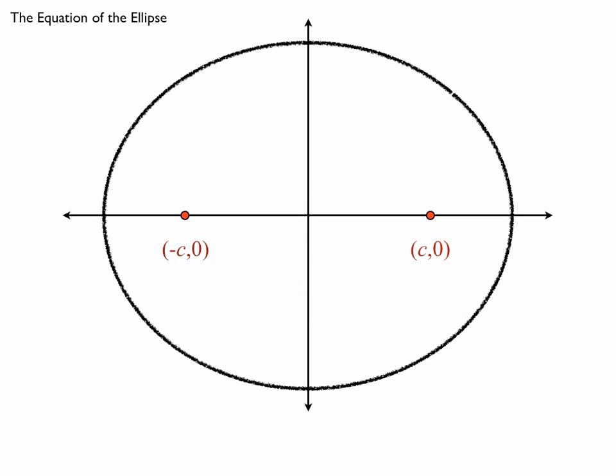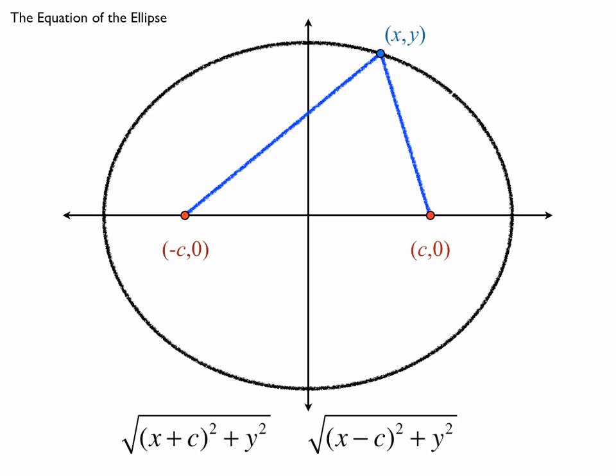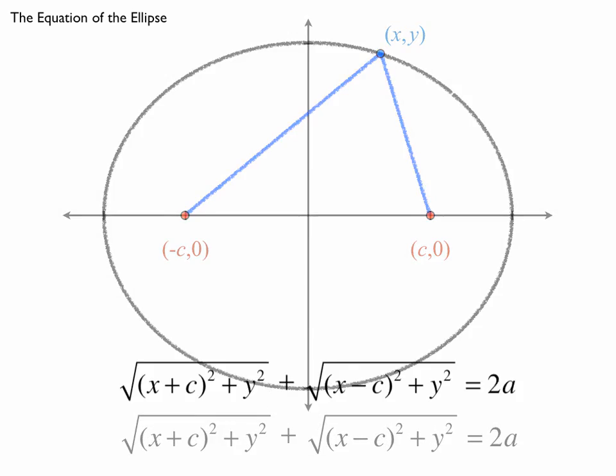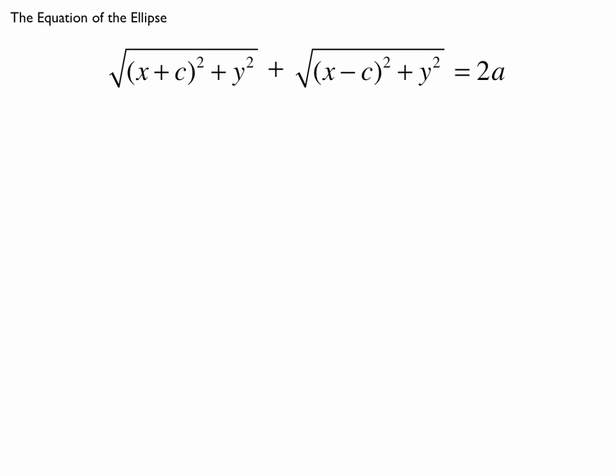So here's our ellipse with the two foci. A generic point, which is to say it doesn't have to be a special point, any point, a generic point has this property that the distance to one focus plus the distance to the other focus is equal to 2a. That's what we just discovered.